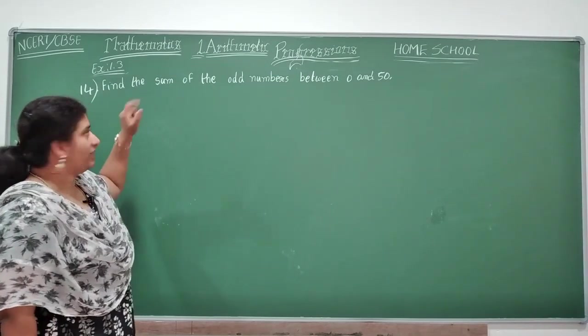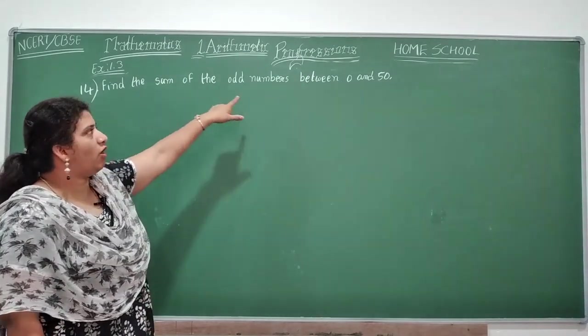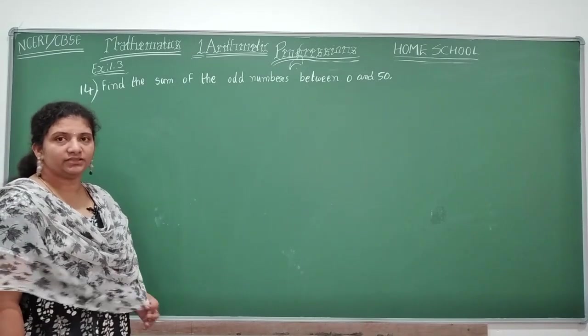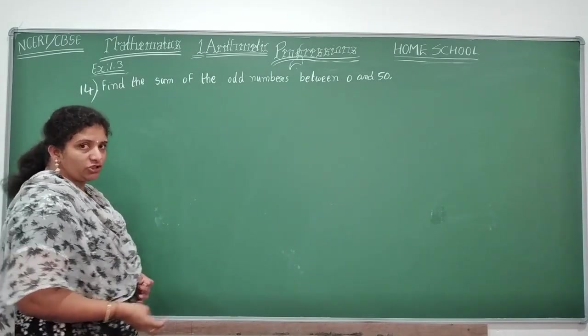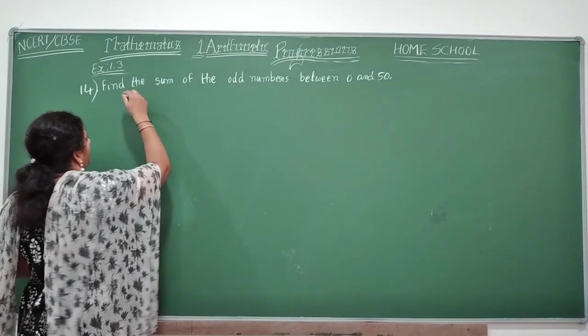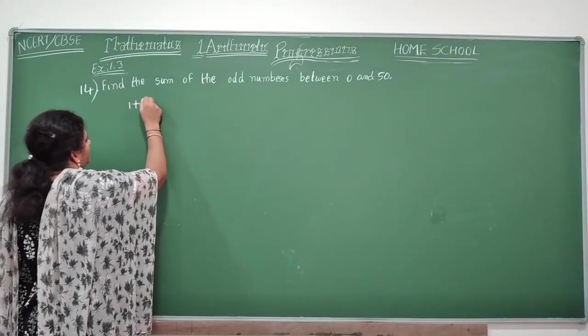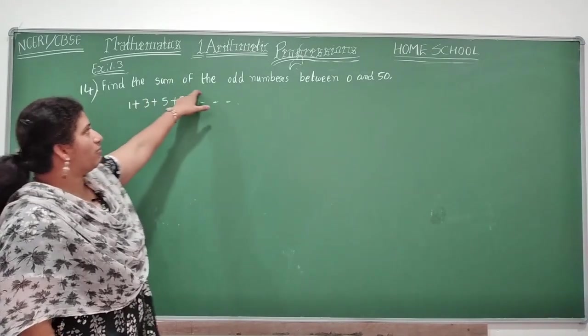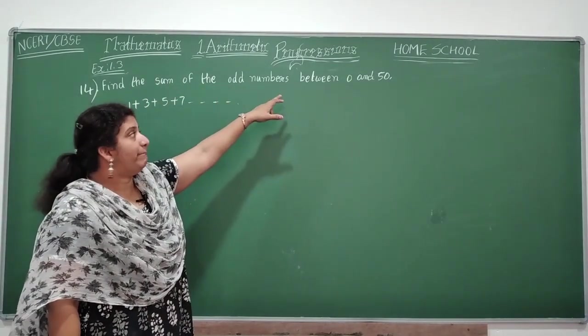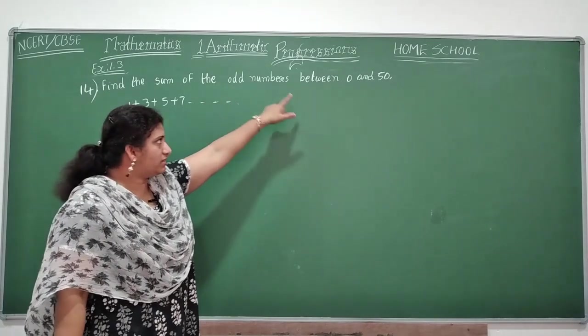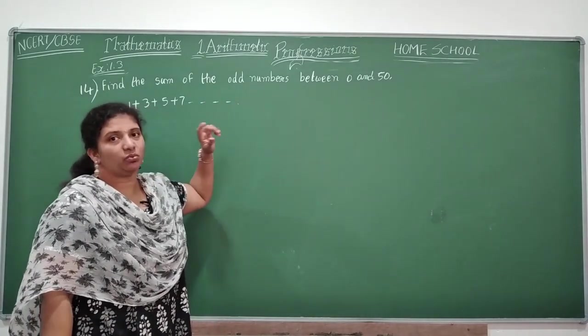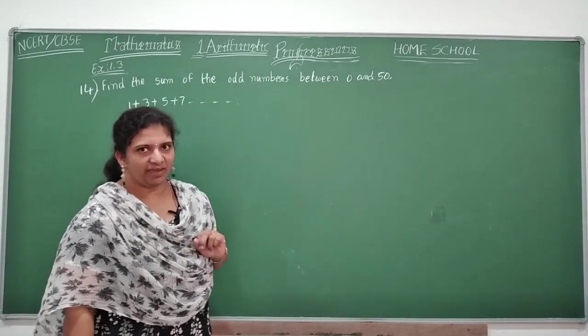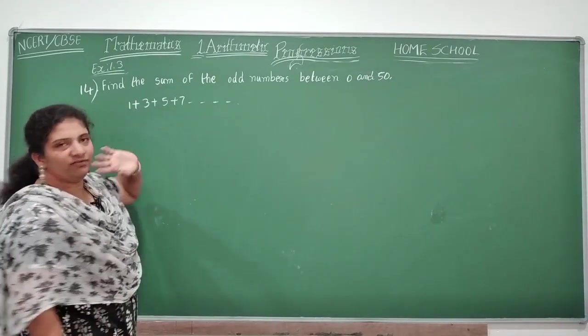Look here children, 14th problem. Find the sum of the odd numbers between 0 and 50. So look here children, odd numbers - odd numbers means you know odd numbers, right? Which are not divisible by 2. So what are odd numbers here? I will write 1, 3, 5, 7, so on. Find the sum of the odd numbers between - between, so listen the word carefully here. Between means you should not include these two numbers. Middle numbers we have to take, between 0 and 50.